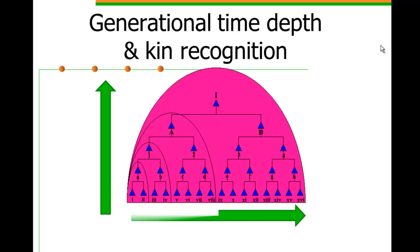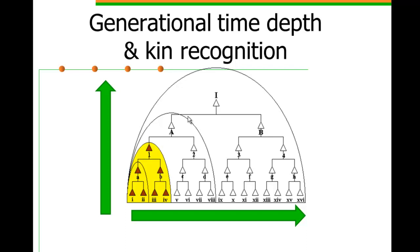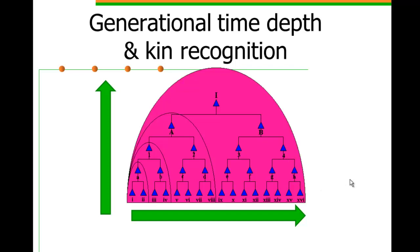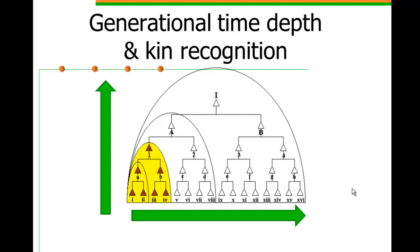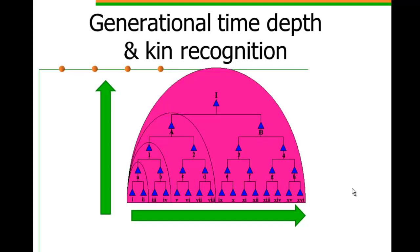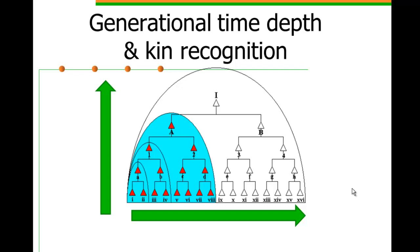And this shows how using patrilineal descent and following that one link we're able to go deep into the past, but we're also able to come down and connect ourselves to other people through just one gender. So not always, but frequently, unilineal descent is associated with deep genealogies and an ability not to recognize all links to other relatives, but to follow out some links quite extensively.